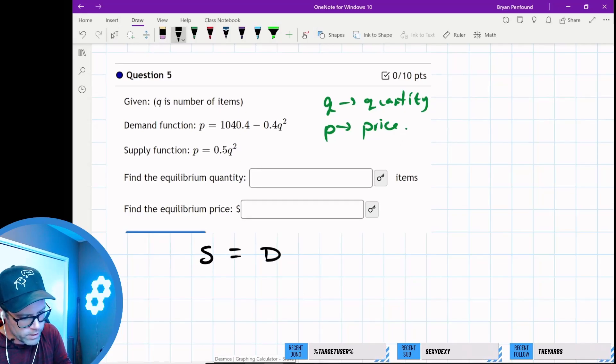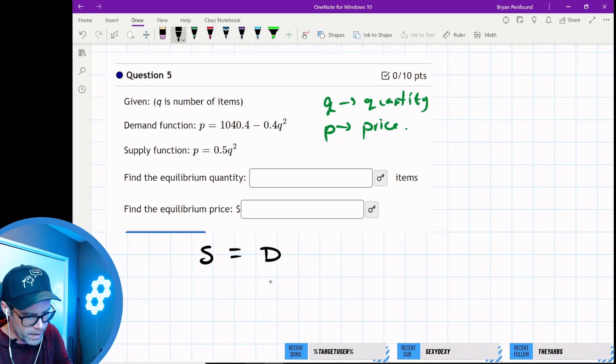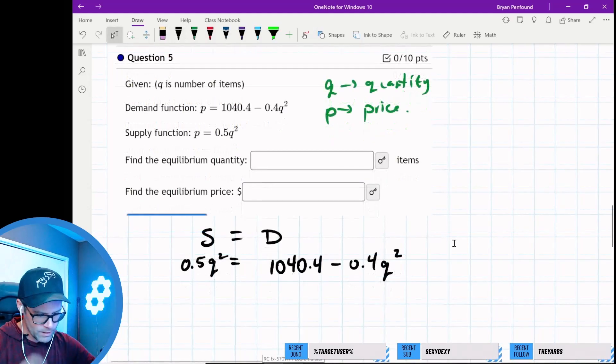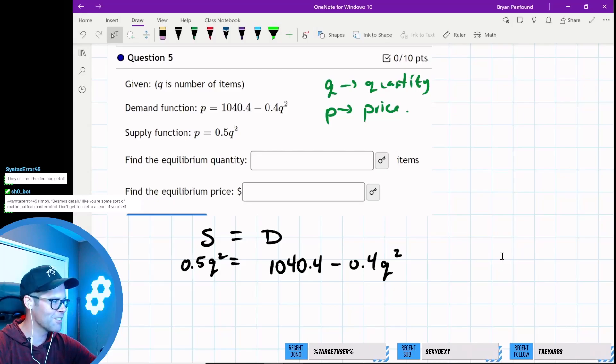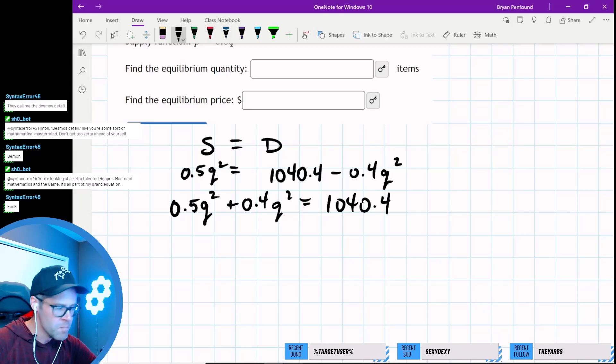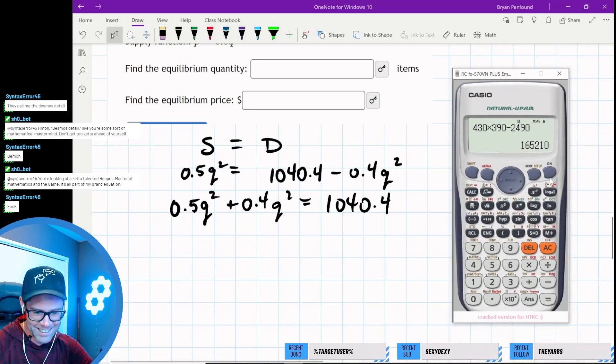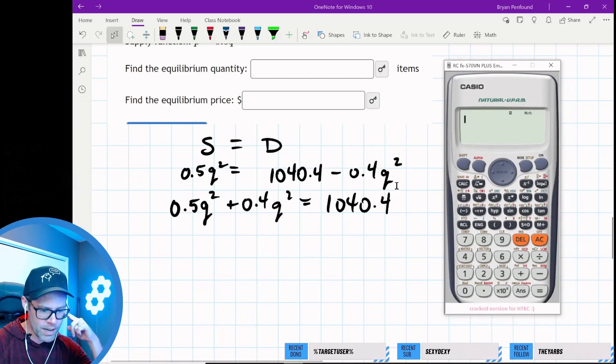Let's prove that algebraically. We need supply to equal demand. Since both have p equals something, I can set them equivalent. Demand is 1040.4 minus 0.4q squared, and supply is 0.5q squared. The Desmos demon, okay, I got you now. You're looking at a talented master of mathematics in the game.